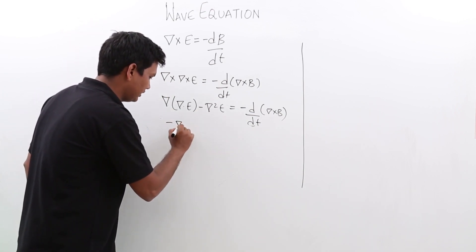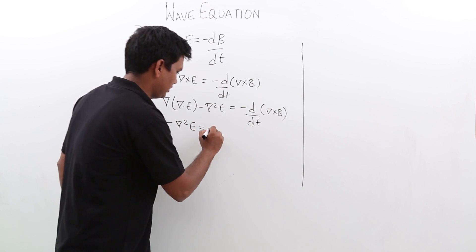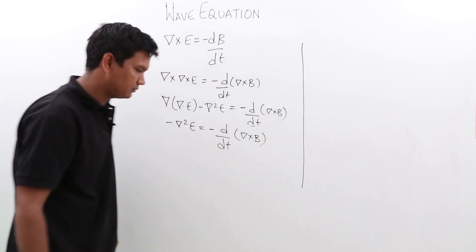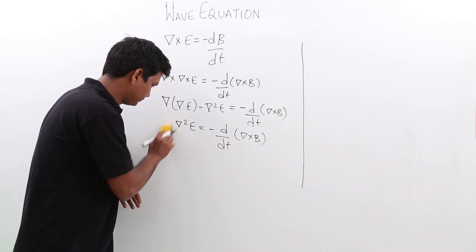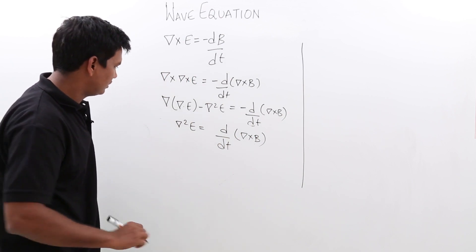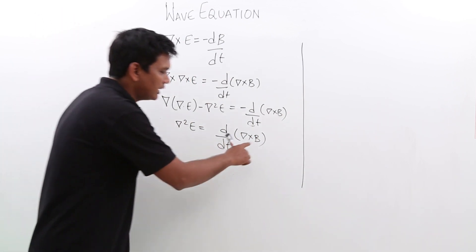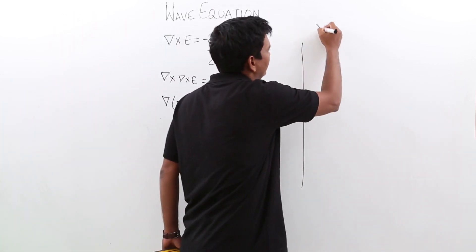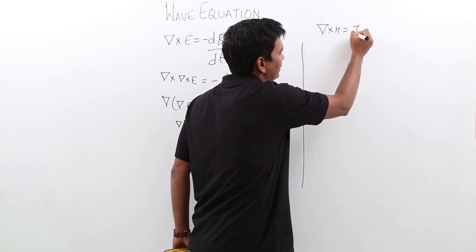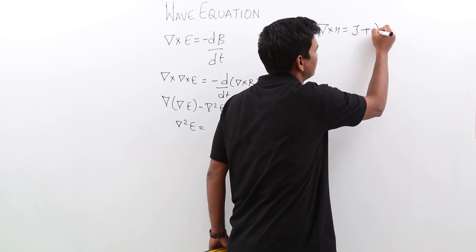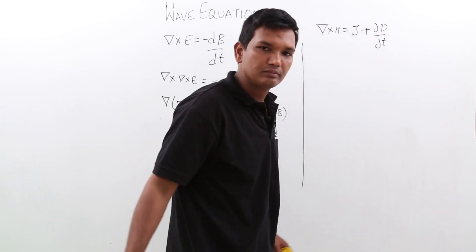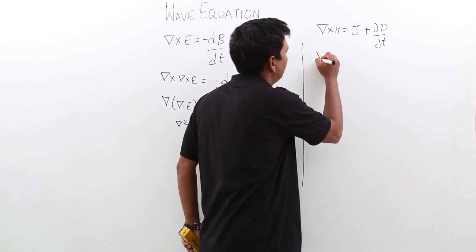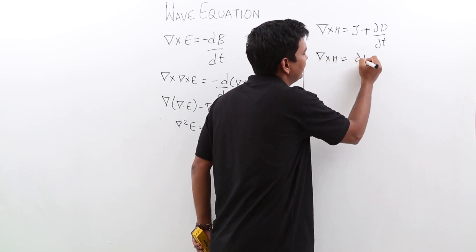We will be left with: del square E is equal to minus d by dt of del cross B. Now, what is del cross B? We already know that del cross H, as per the Maxwell equation, is J plus del D by del T. As we are talking about a vacuum, there are no charges; J is the conduction current, so it would also be 0. So del cross H would be del D by del T.